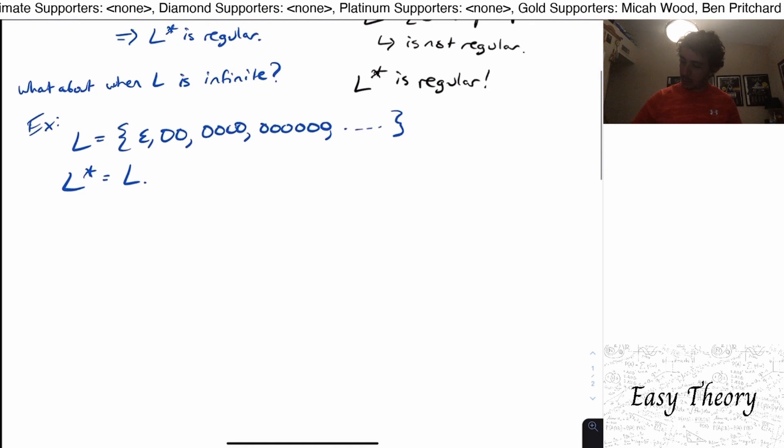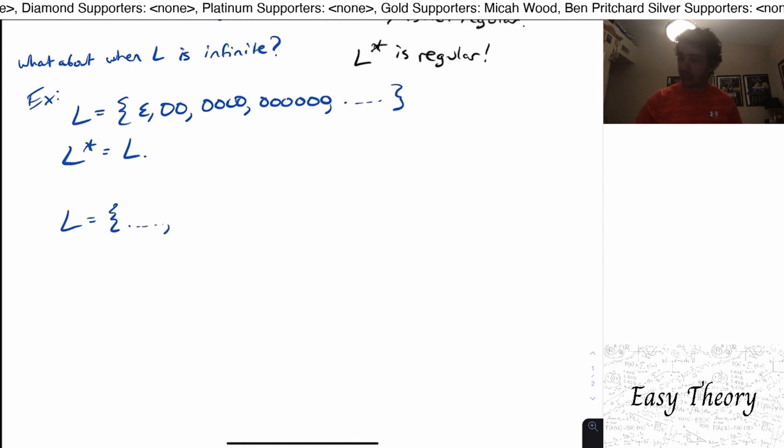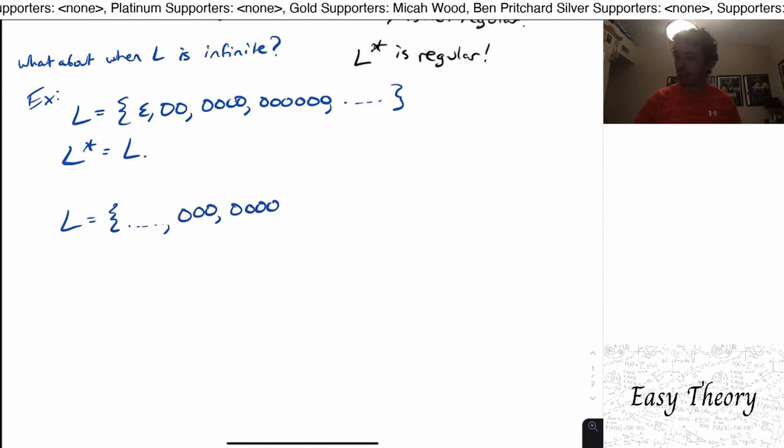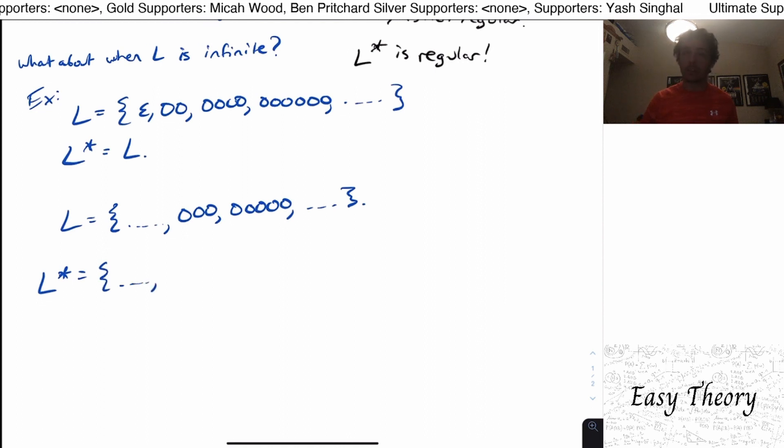But suppose we had something like this. Suppose that L has some strings, and let's say it has three zeros and five zeros, and then maybe some other strings. Well, L star must have all of the original strings, because I must be able to pick them one at a time, either once or more, or even zero times.